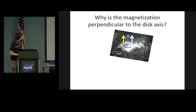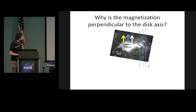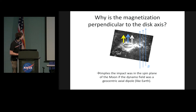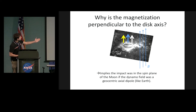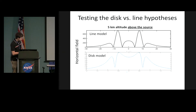One other puzzle: if you believe this model, why is the magnetization perpendicular to the disk axis? It's strange to have such symmetry in nature — it's probably a clue to something. That would work if the ambient field was oriented this way when it was magnetized, implying perhaps the impact was oblique and in the spin plane of the moon, and the dynamo field was essentially a geocentric axial dipole just like the Earth's. If you're at the equator, coming in at a low glancing angle, the fields are up in the page and you magnetize this crater. No one seems to have noticed this before.